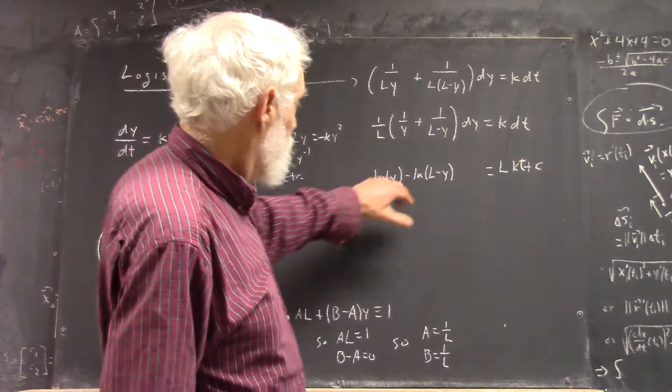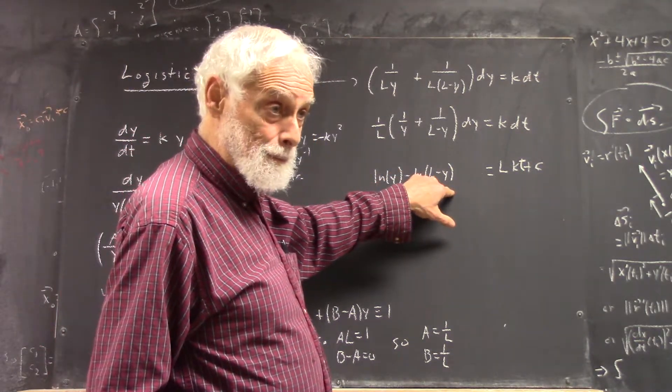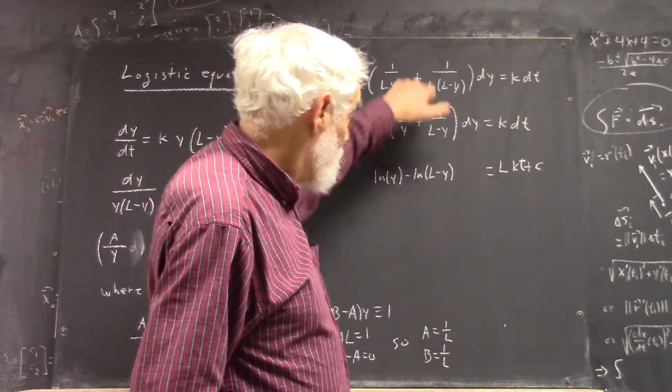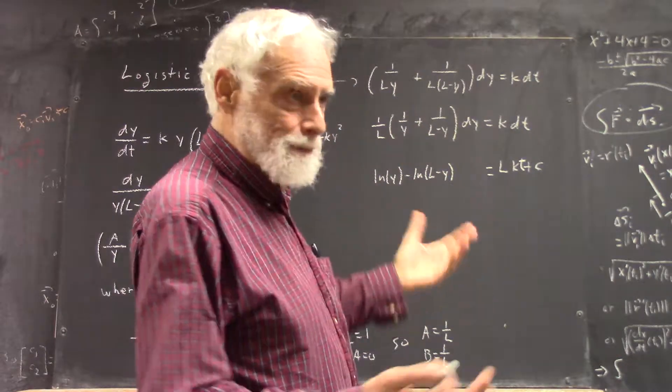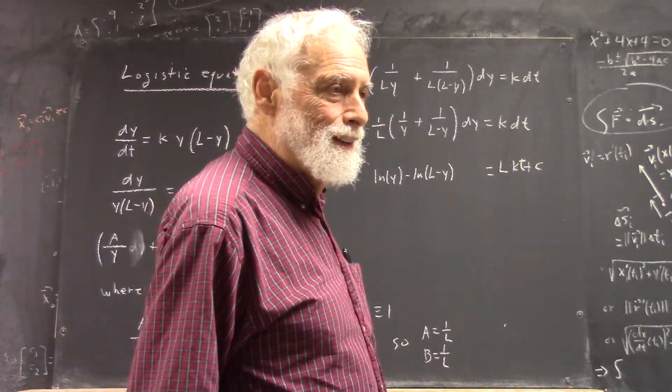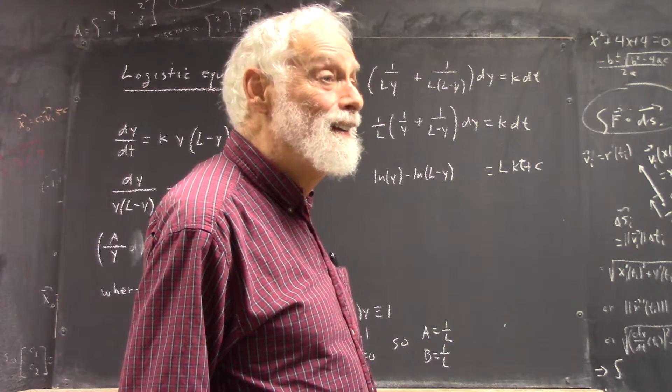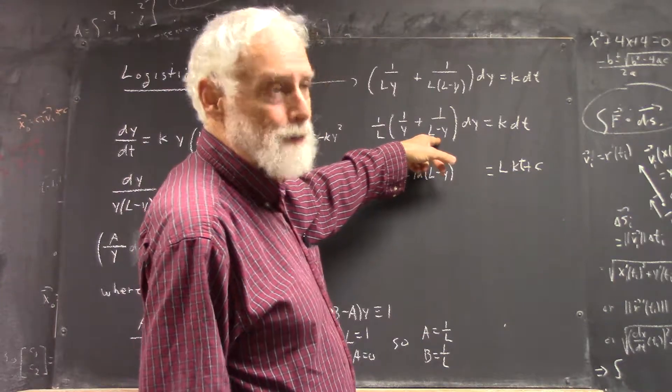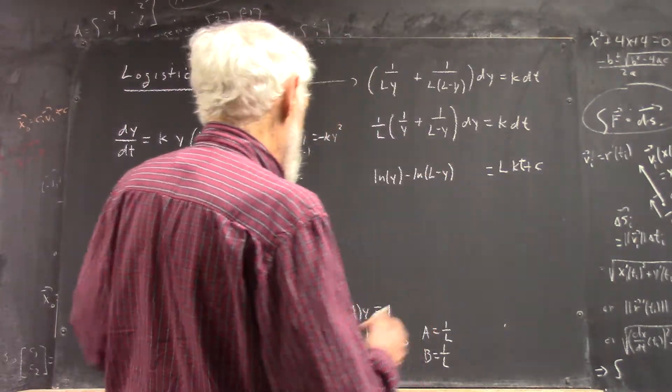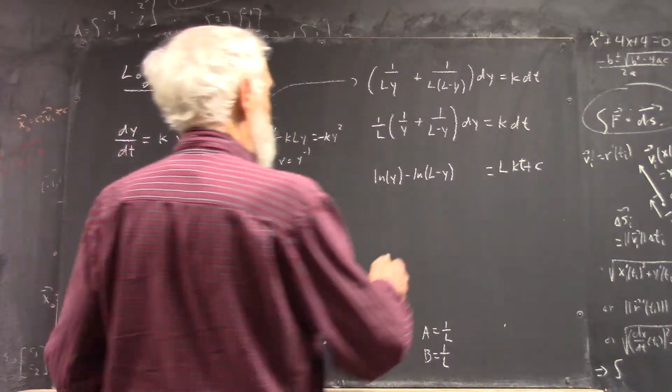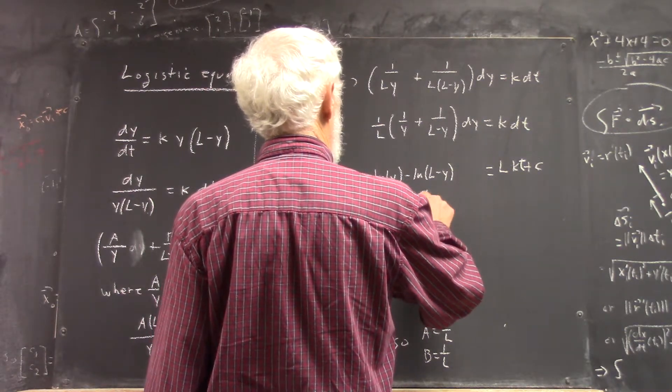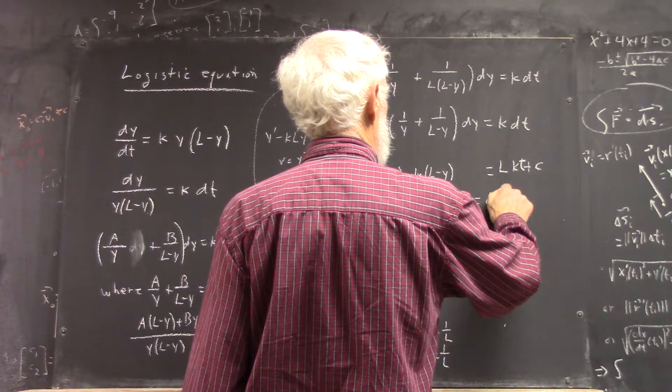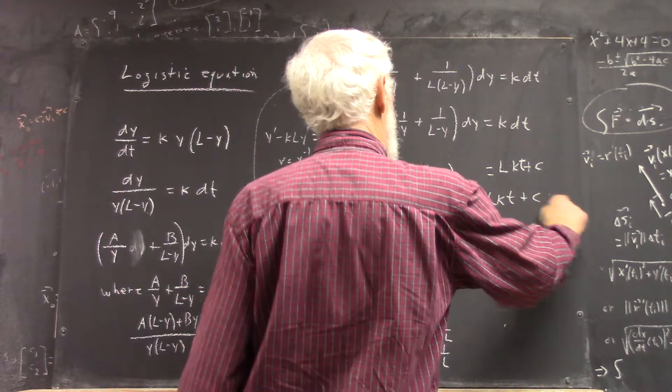And what's the derivative of the natural log of L minus y? Negative 1 from the chain rule over L minus y. With that negative, it becomes 1 over L minus y. I thought we had lost a constant somewhere. Well, your constant is negative 1 because of the chain rule. And you know that. Okay. Well, this is natural log of y over L minus y. Right?